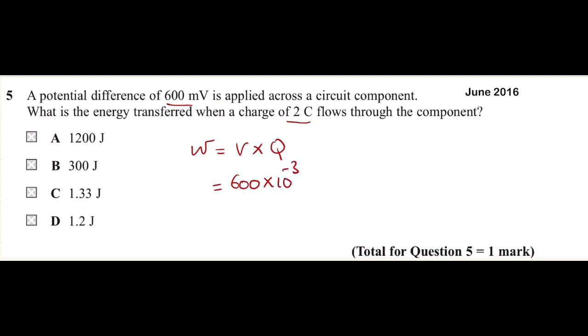Times the amount of charge, which is 2 coulombs. So it's 1200 times 10 to the power of minus three. Just cancel out the zeros so we get 1.2 joules.